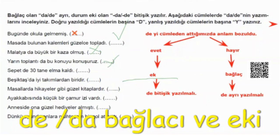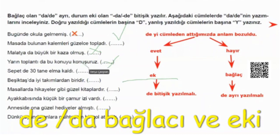Devam edelim. D ekini attığımızda 'sepet 30 tane elma kaldı' olmuş. Anlam bozulmuş mu? Sepet 30 tane... Evet. O zaman ne olacak bu? Birleşik yazılması lazım, yani ek olacak ve birleşik yazılacak. Peki yazmış mı birleşik? Hayır, ayrı yazmış. O zaman yanlış. Çok güzel. Devam edelim.